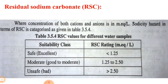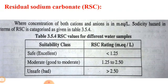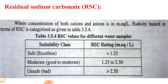In the RSC table: when RSC is less than 1.25 milliequivalents per litre, the water is safe and excellent. When RSC is 1.25 to 2.50, it is moderate — good to moderate. When RSC exceeds 2.50, that water is unsafe for crop production. This table shows RSC values and the corresponding suitability class of irrigation water.